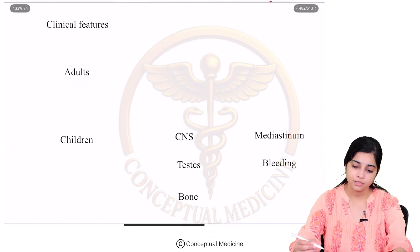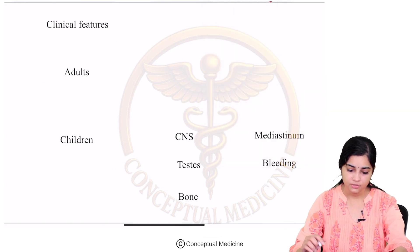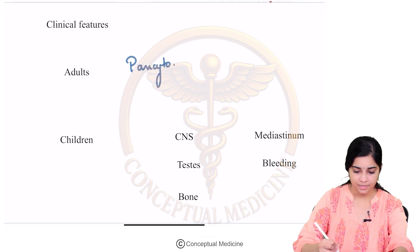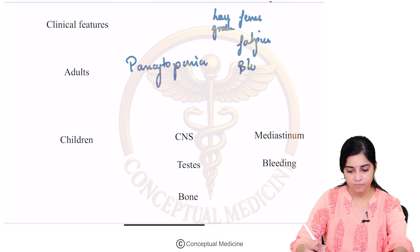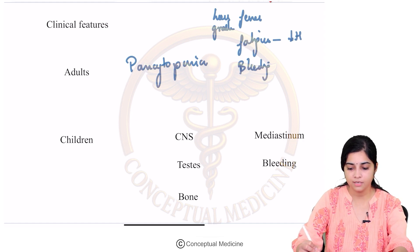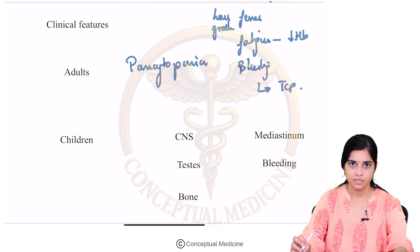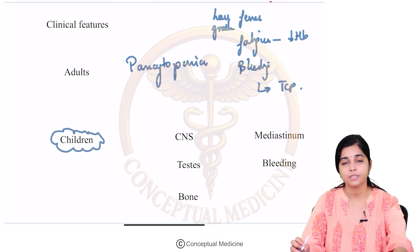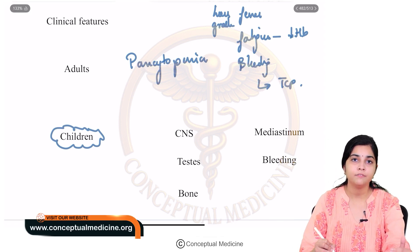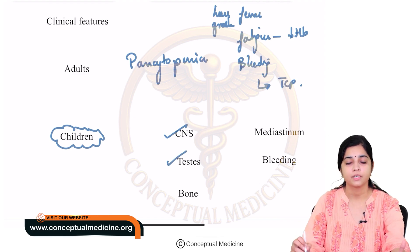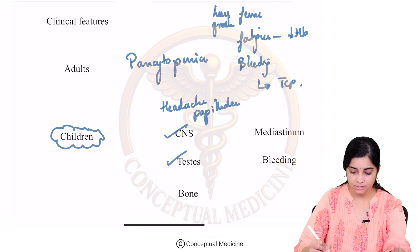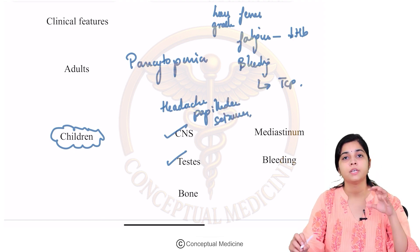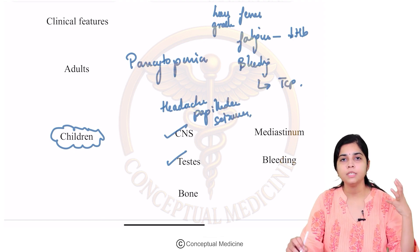What are the clinical features of ALL? In adults, patients typically present with a pancytopenia picture — low-grade fever, fatigue due to anemia, and bleeding manifestations due to thrombocytopenia. In children, there is a definitive increased risk of CNS involvement, presenting with headache, papilledema, or seizures due to infiltration of leukemic cells and meningeal involvement.